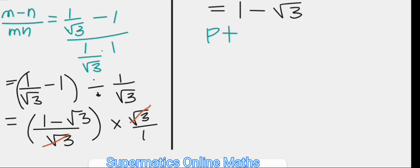Since this is to be expressed in the form p plus q root r, we can say that by comparing the coefficients, p is 1, q is negative 1, which is the coefficient of the radical factor, while r is 3, the number under the radical sign.